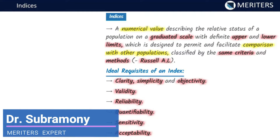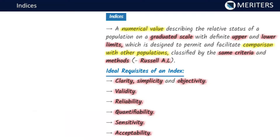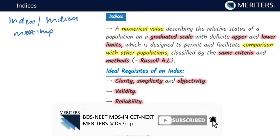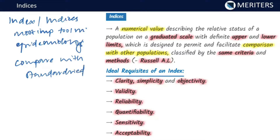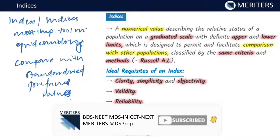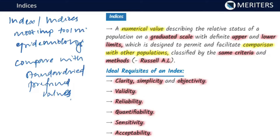In this video we will be discussing about indices. Index or indices are the most important tool in epidemiology, where you can compare your values with standardized preformed values. If you are doing a study and get a specific measurement, you compare it with pre-existing standardized measurements already existing in literature. That is your index — one of the most important tools in epidemiological studies.